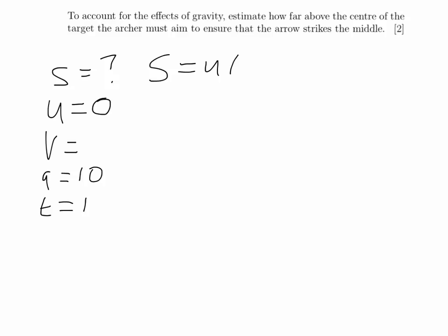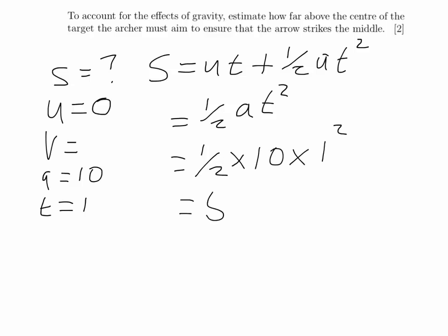Originally, when it starts falling, it's got a velocity of zero. So we can use S equals UT plus half AT squared. UT cancels out because U is zero. So half AT squared. So we've got half times the acceleration due to gravity, which is 10, times our time, which is 1 squared. So that means we have to aim 5 metres above the target.